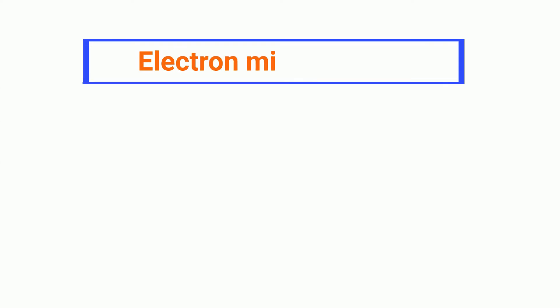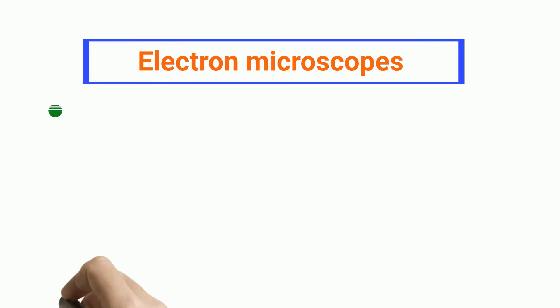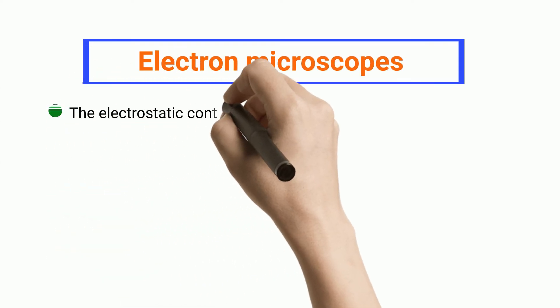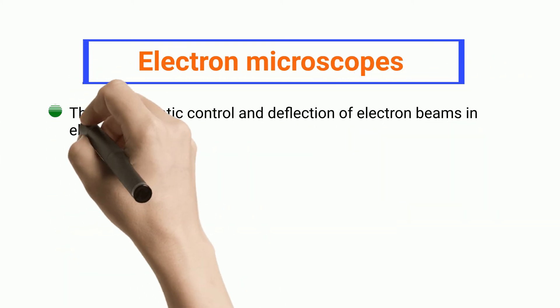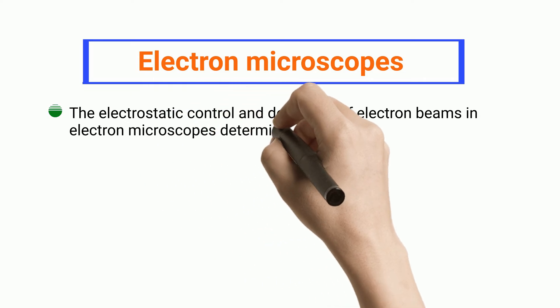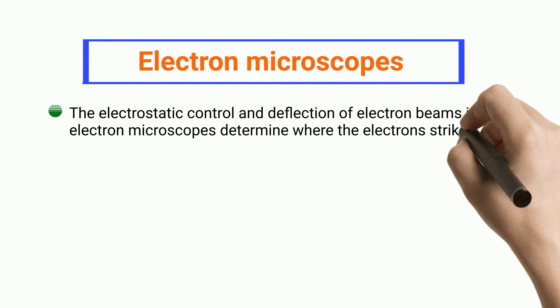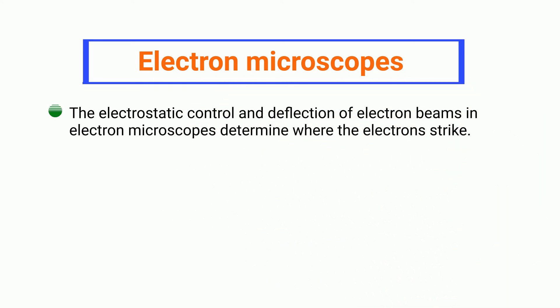The electrostatic control and deflection of electron beams in electron microscopes determine where the electrons strike.